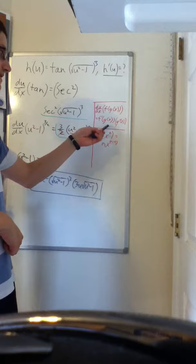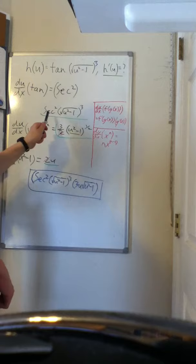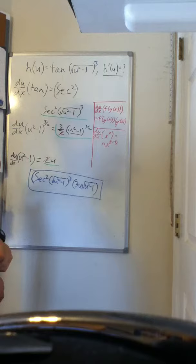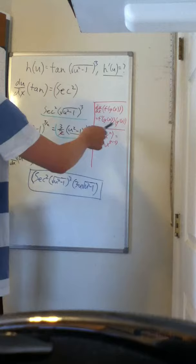To start we take the derivative of tangent which is secant squared. So we have f prime secant squared of g of x, the inside, which in this case is the cube of square root of u squared minus one. Now we are not done because we have to take out the g of x and take the derivative of that.